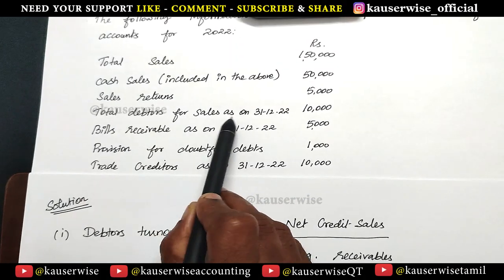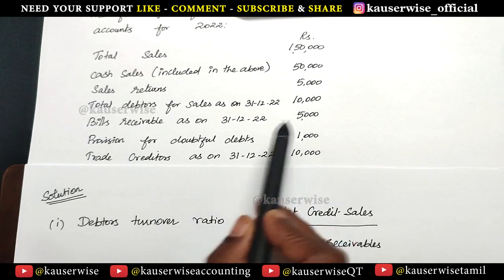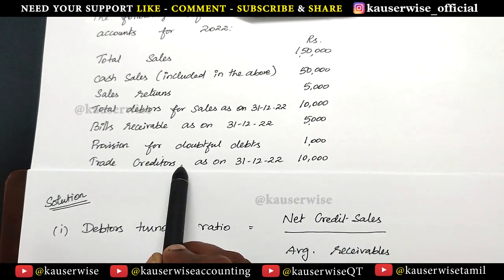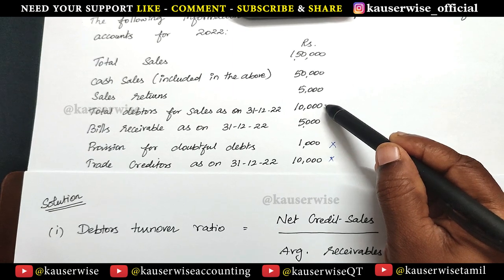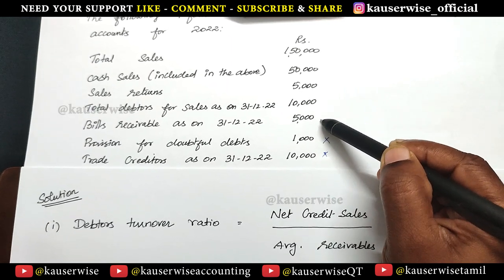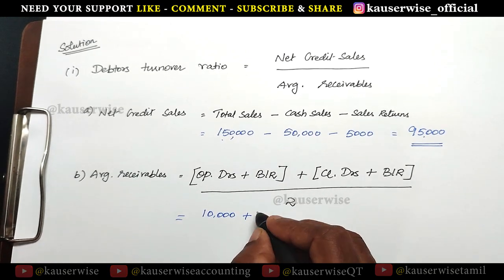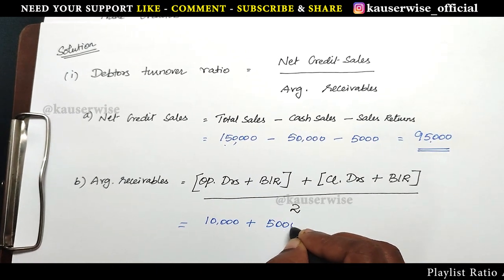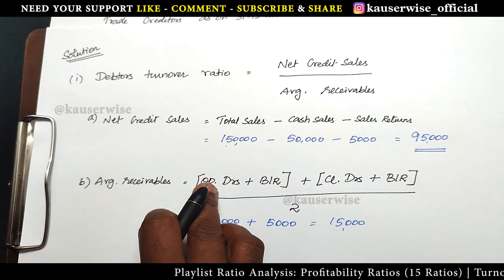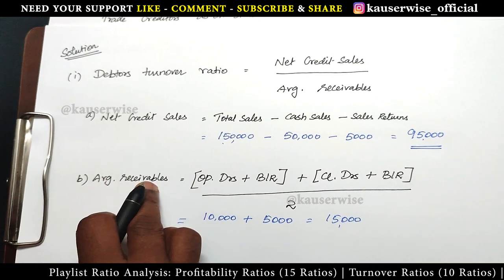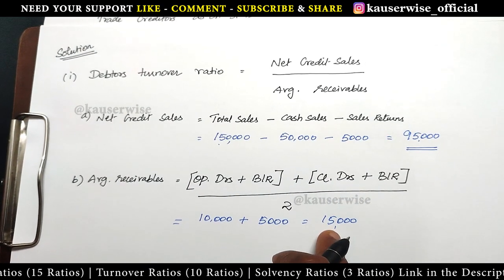From the problem: total debtors as on 31st December — closing debtors: 10,000. Bills receivable as on 31st December: 5,000. Provision for doubtful debts and trade creditors are two irrelevant pieces of information — ignore them. We need to add only closing balance of debtors and closing balance of bills receivable. So 10,000 plus 5,000 equals 15,000, which is the average accounts receivable. If opening balance were also given, you would add and divide by 2 to get average receivables.